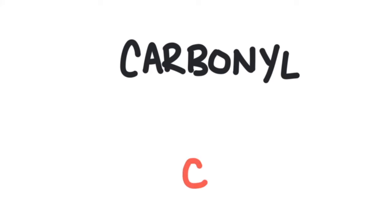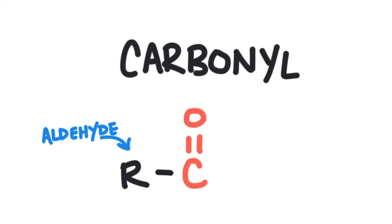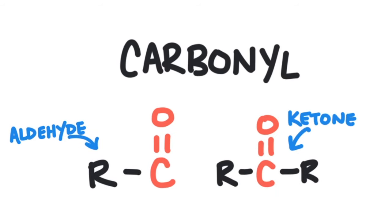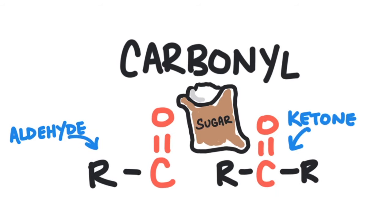Next is the carbonyl group. This group consists of a carbon that is double bonded to an oxygen atom, which is then attached to the carbon chain. If the carbonyl group is at the end of the carbon chain, the compound is called an aldehyde. If the carbonyl group is within the carbon chain, the compound is called a ketone. Sugar is a compound that contains carbonyl groups.